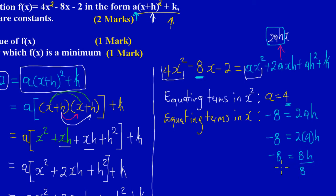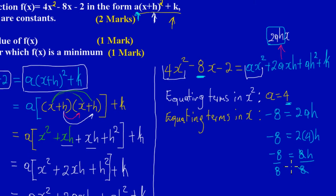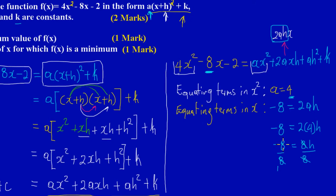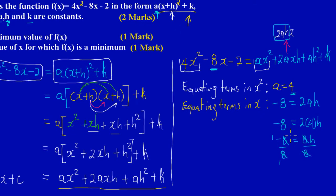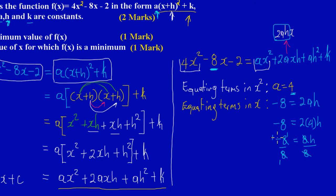Dividing both sides by 8: 8 divides into itself once, and 8 divides into negative 8 to give negative 1. Therefore h is equal to negative 1.